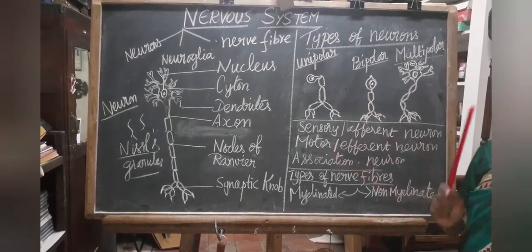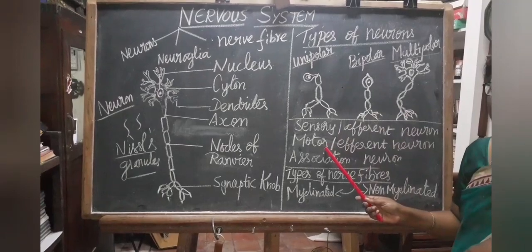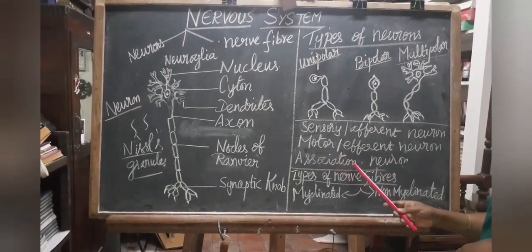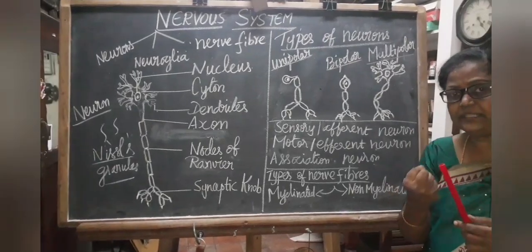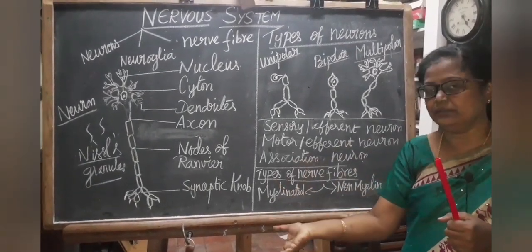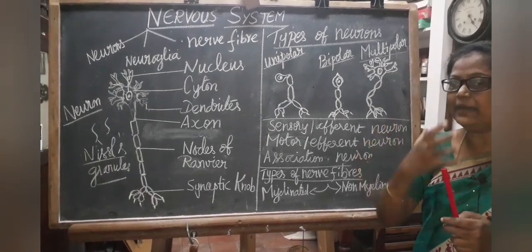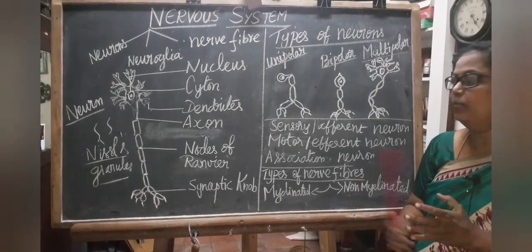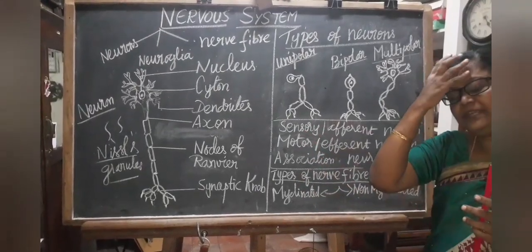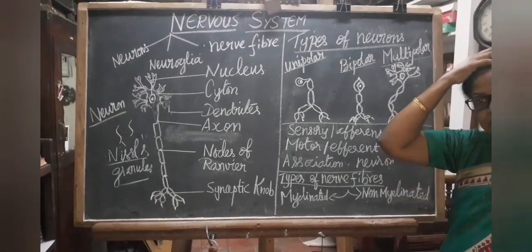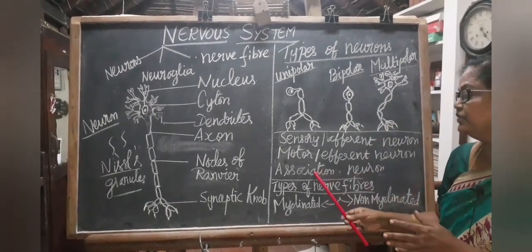According to their functions, neurons are divided into three types: sensory or afferent neurons, motor or efferent neurons, and association neurons. Sensory neurons pass messages from sense organs to the central nervous system. Motor neurons pass messages from the central nervous system to different parts of the body. Association neurons serve both functions.